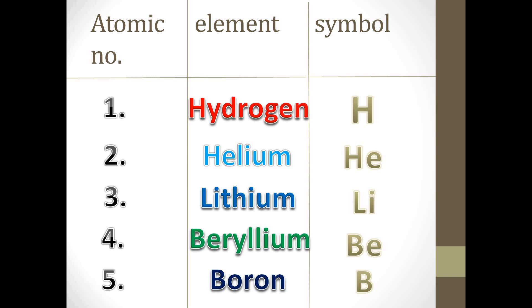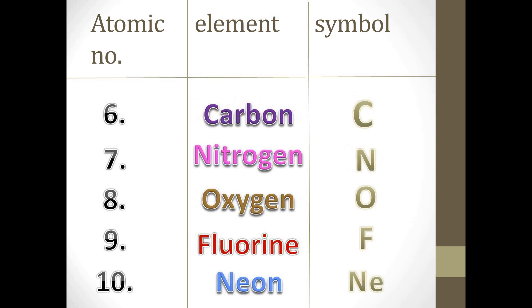The first element is Hydrogen and its symbol is H. The second element is Helium and its symbol is He. The third element is Lithium and its symbol is Li. The fourth element is Beryllium and its symbol is Be. The fifth element is Boron and its symbol is B.